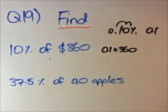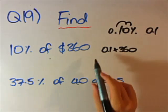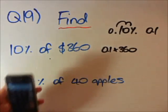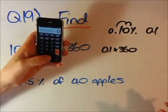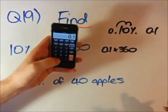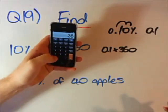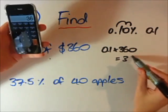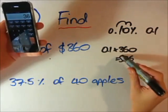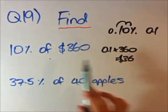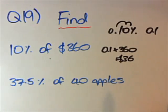This step is a pretty easy one, but if the decimal were harder we'd use our calculator. So: 0.1 times 360 equals 36. Therefore 10% of $360 is $36.